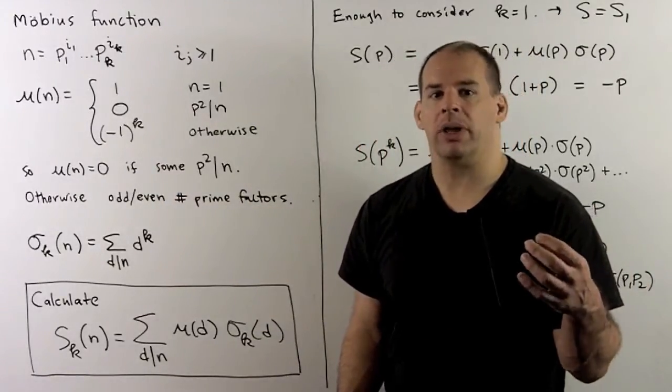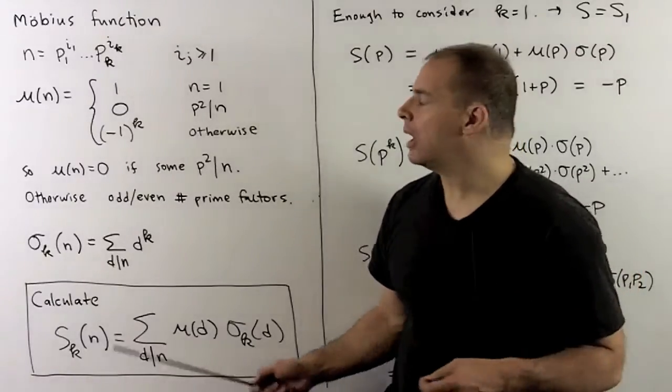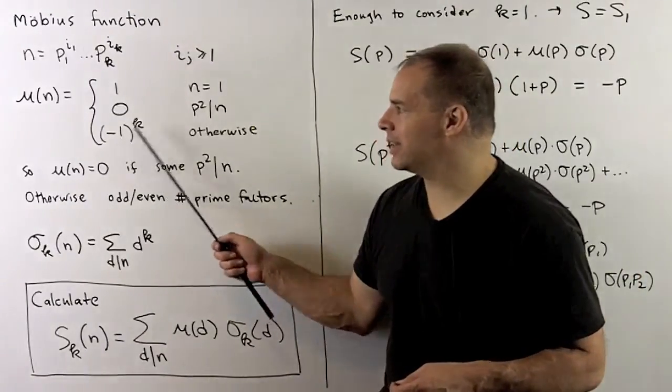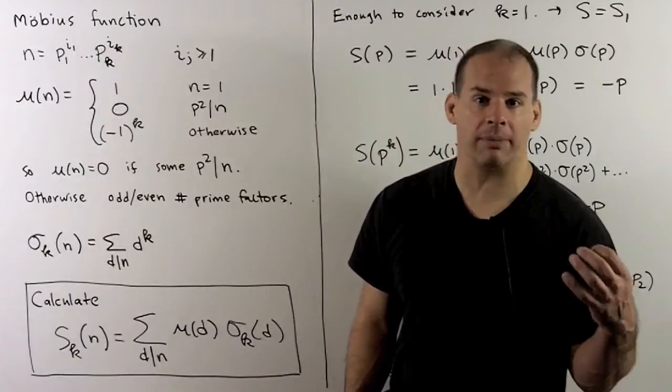It'll be equal to 0 if some prime squared divides n. Otherwise, it's going to be minus 1 to the k, where k is the number of prime factors.